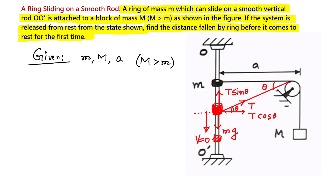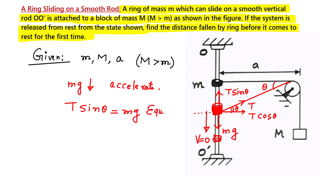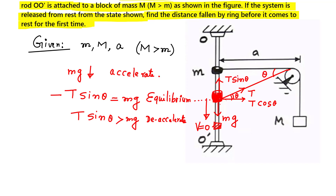To summarize: the forces on the ring initially give downward acceleration. At a certain point, T sin θ minus mg equals zero — meaning T sin θ equals mg — which is the equilibrium position. After that, since sin θ is an increasing function, T sin θ becomes greater than mg, causing deceleration. At the equilibrium position the ring still has some velocity.